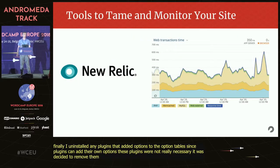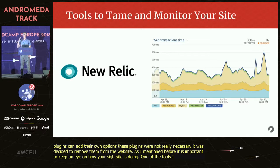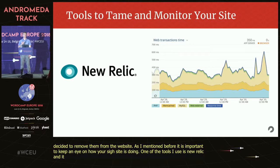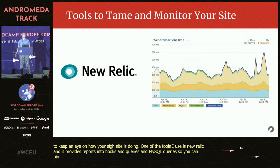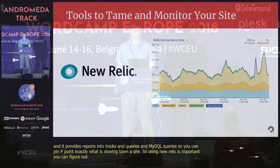It's important to keep an eye on how your site is doing. One of the tools I like to use is New Relic. New Relic provides really precise reports into specific WordPress hooks, queries, and MySQL queries so you can pinpoint exactly what is slowing down the site. Using a tool like New Relic is important because you can figure out whether the options table is what's slowing down your site or if something else deeper is going on.